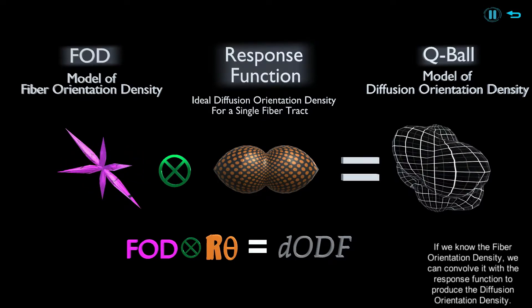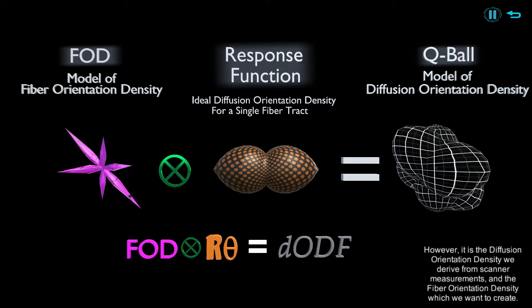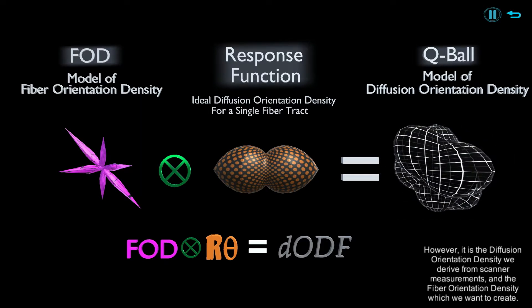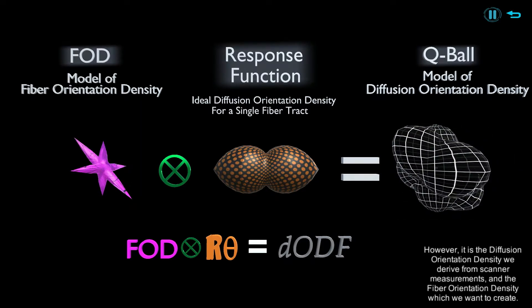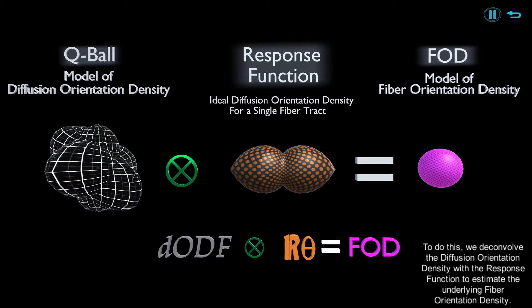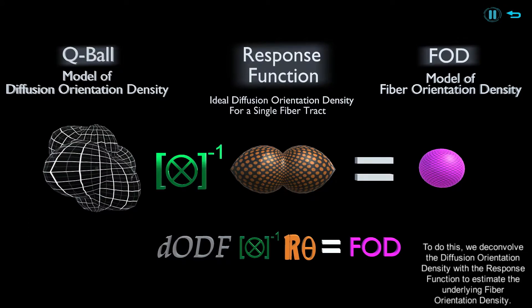However, it is the diffusion orientation density we derive from scanner measurements, and the fiber orientation density which we want to create. To do this, we deconvolve the diffusion orientation density with the response function to estimate the underlying fiber orientation density.